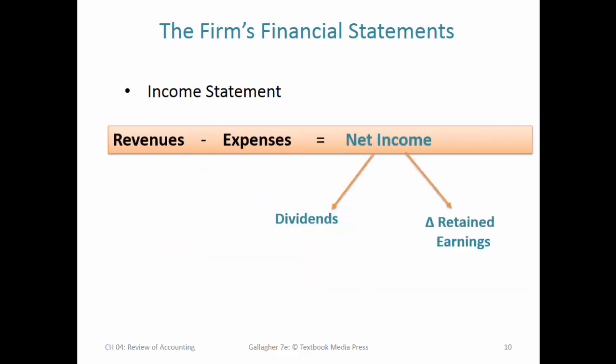Net income always consists of dividends plus retained earnings. If you're a small enterprise without stockholders you might not have dividends. Even large companies with millions of stockholders sometimes won't pay dividends — meaning all positive net income is retained and reinvested into the company for further investment in assets or operating expenses. If net income is negative, it's a reduction in retained earnings and reduces both assets and equity.